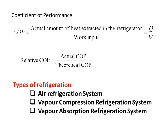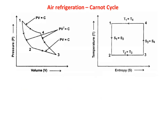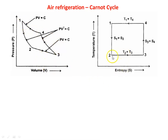There are three different types of refrigeration systems: air refrigeration system, vapor compression refrigeration system, and vapor absorption refrigeration system. For the air refrigeration system, we use the reversed Carnot cycle. In the reverse Carnot cycle: 1 to 2 is isentropic expansion (work done on the system), 2 to 3 is isothermal expansion, 3 to 4 is reversible adiabatic (isentropic) compression, and 4 to 1 is isothermal compression.